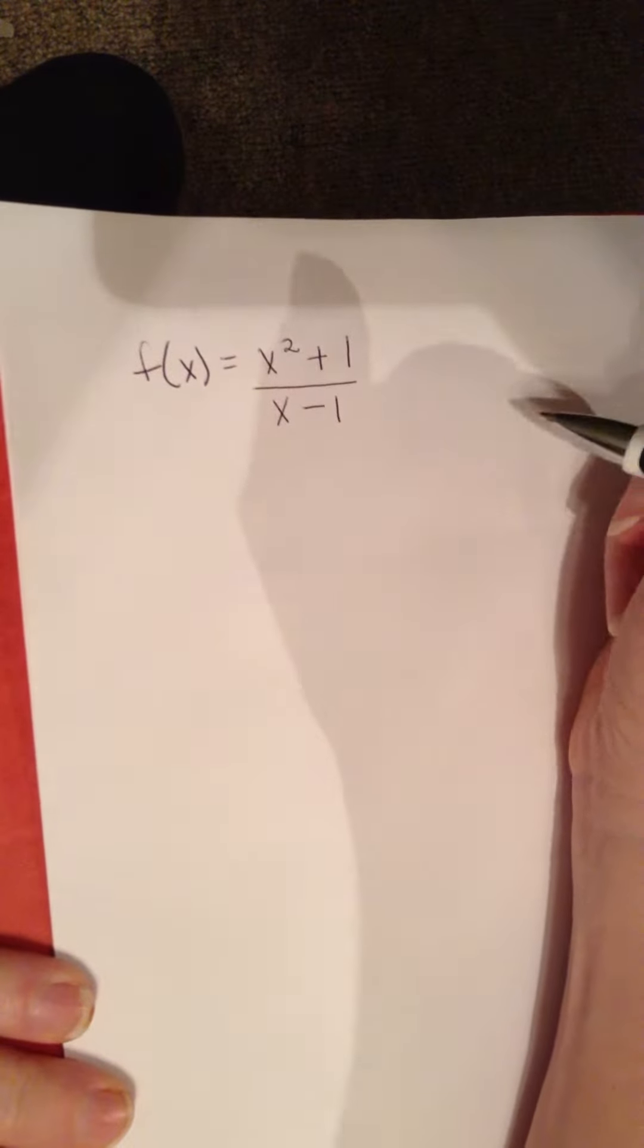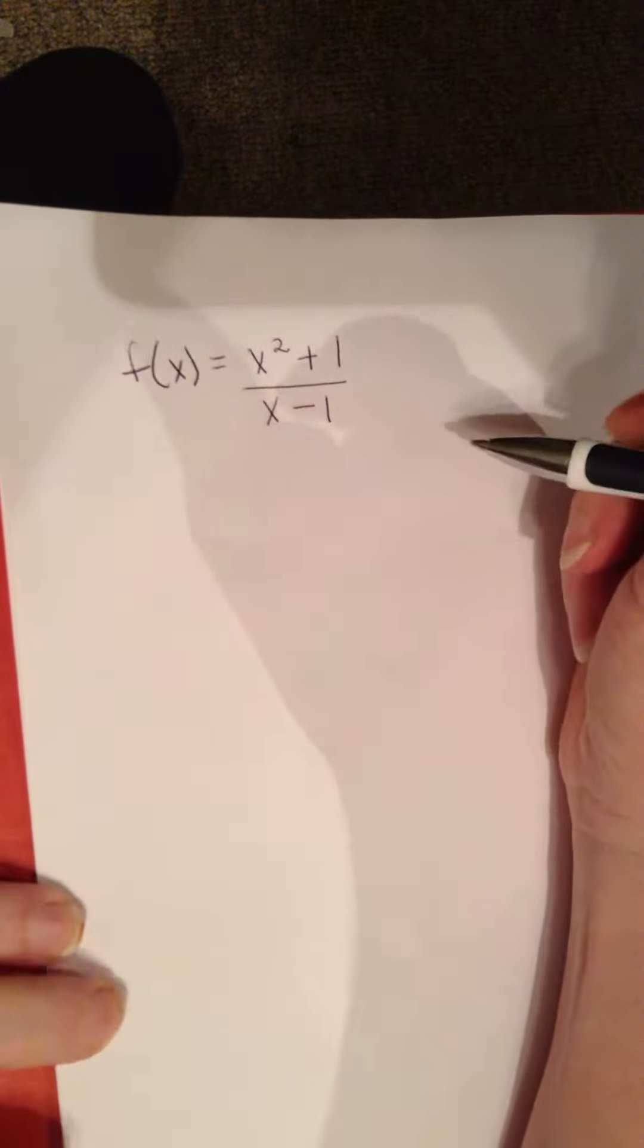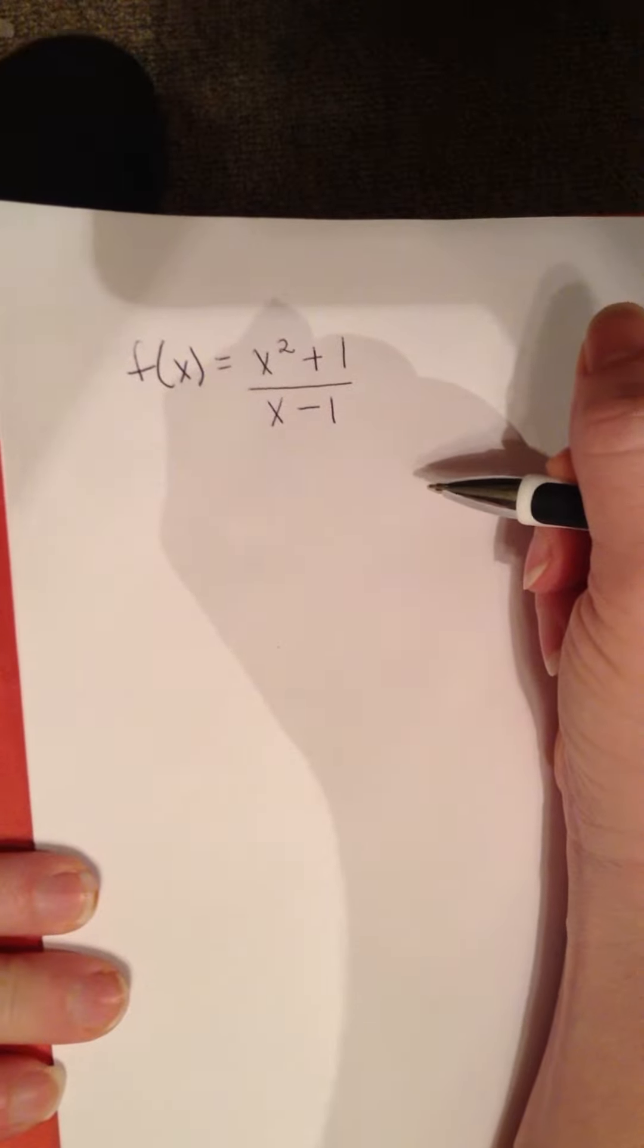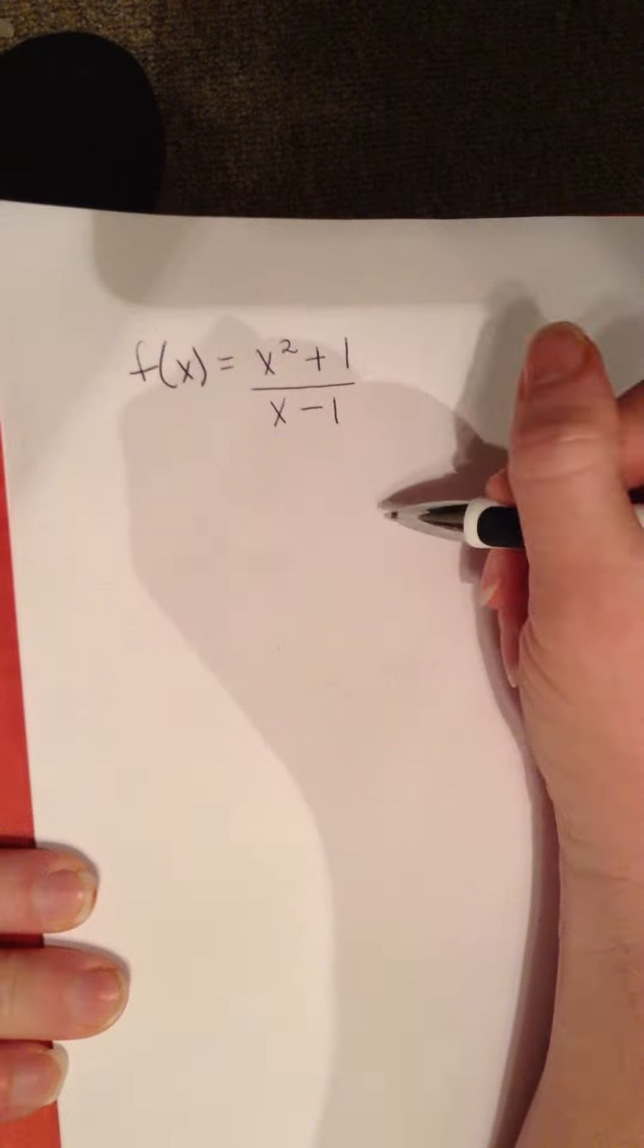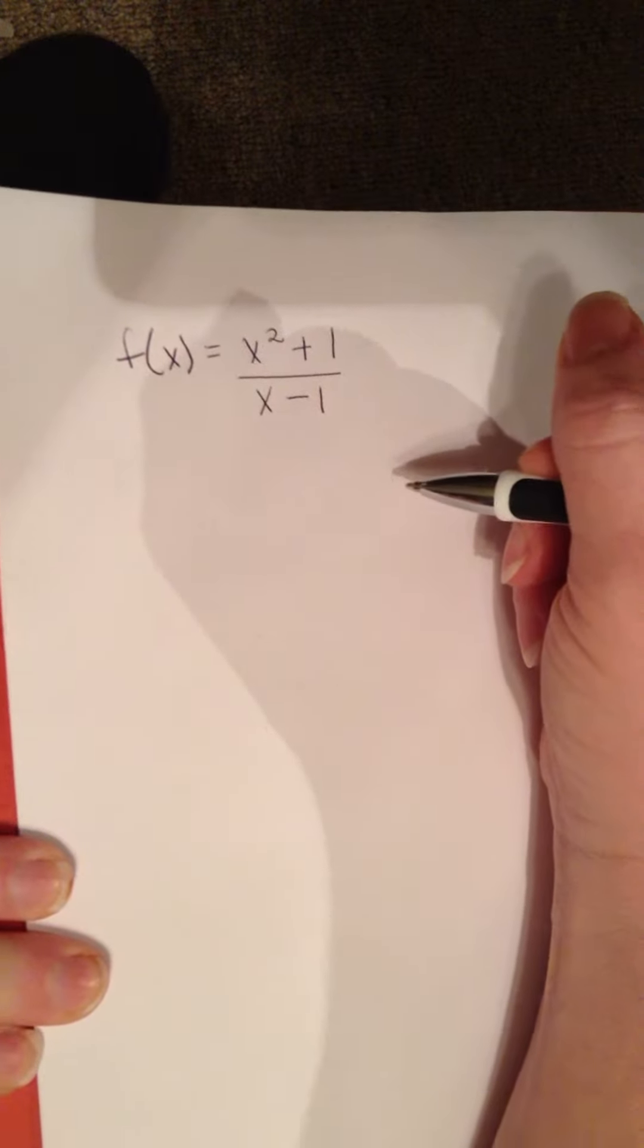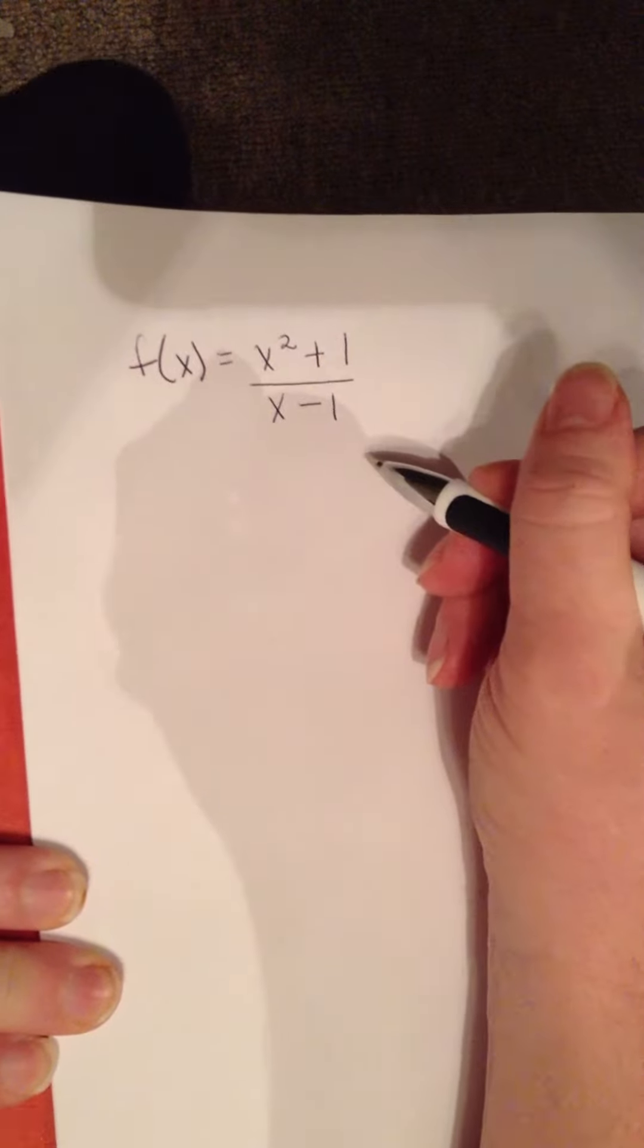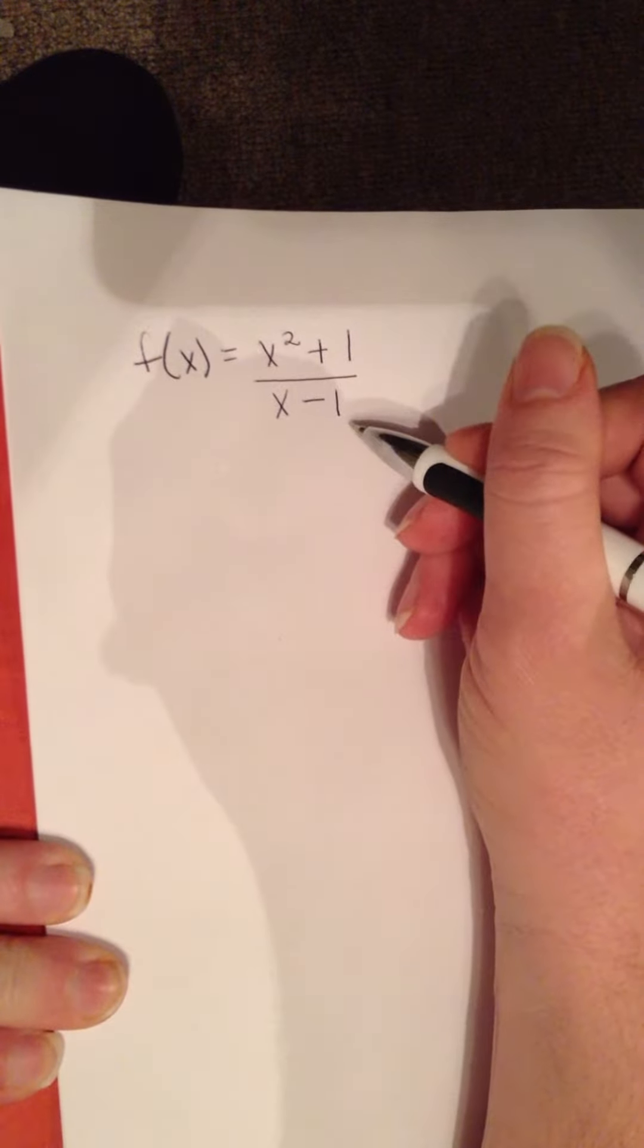This next one is about finding slant asymptotes. Remember, asymptotes are those imaginary boundaries that a graph can never cross. Slant asymptotes would be like diagonals on the graph. In order to find a slant asymptote, all you have to do is divide.